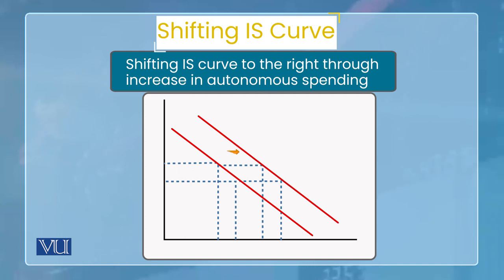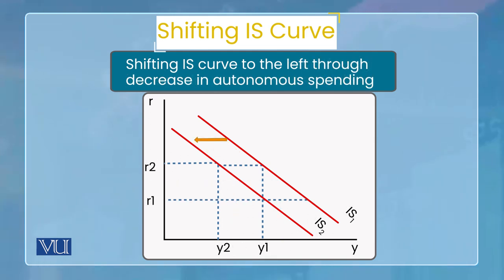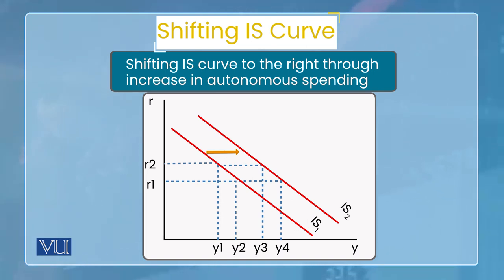These autonomous variables are not helpful in drawing the IS curve. Whenever they change, the IS curve shifts. The shift can be either to the right or to the left. A rightward shift means that total output has increased at a given interest rate — this happens when autonomous expenditure increases, or when any component that negatively affects aggregate demand decreases.